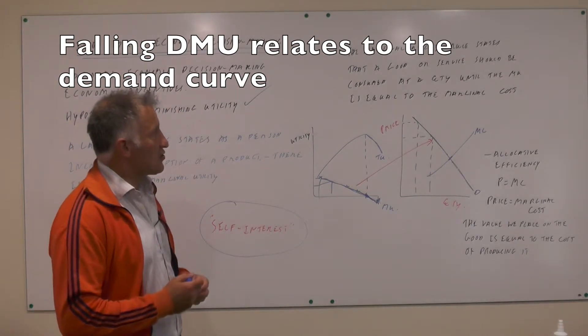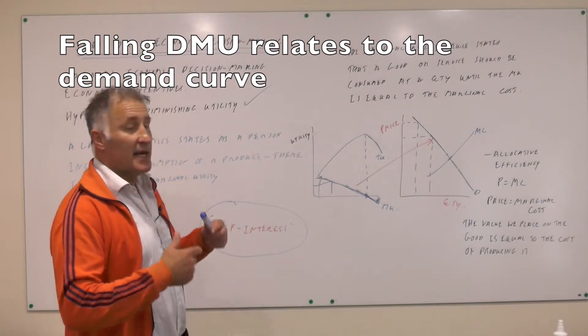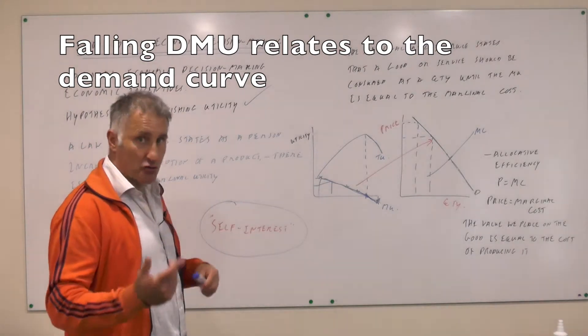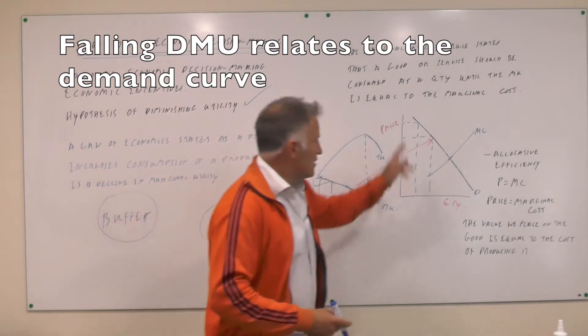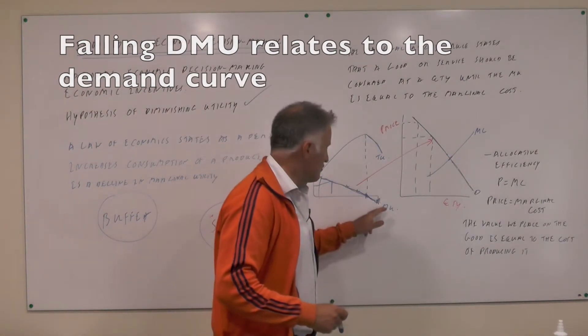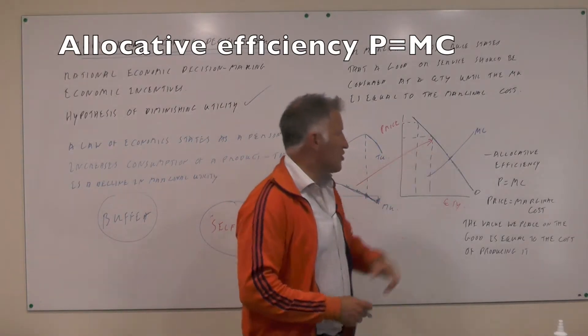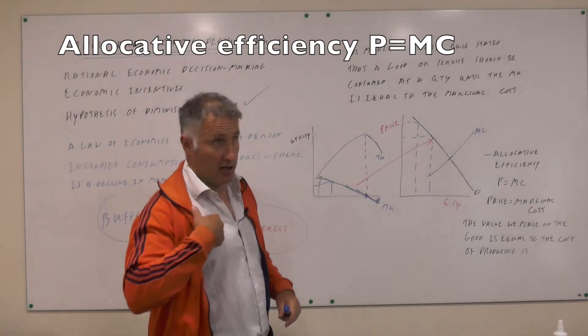The marginal utility rule states that goods or services will be consumed as long as the marginal utility is greater than or equal to the marginal cost. The demand curve shows the marginal utility, and as we have more and more of the goods, the utility falls, just like a demand curve.